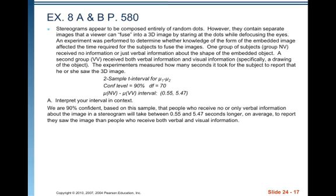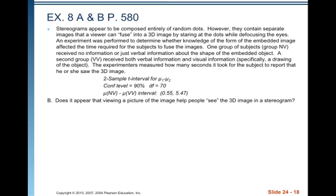We interpret the interval in context: we are 90% confident, based on this sample, that people who received no or only verbal information about the image in the stereogram will take between 0.55 and 5.47 seconds longer on average to report seeing the image than people who received both verbal and visual information. Does viewing the image help? Yes, since the whole interval is positive. If there were no benefit, we'd expect 0 to be in our interval, but it's not. So it does seem that seeing the image ahead of time helps you see the 3D image in the stereogram more quickly.